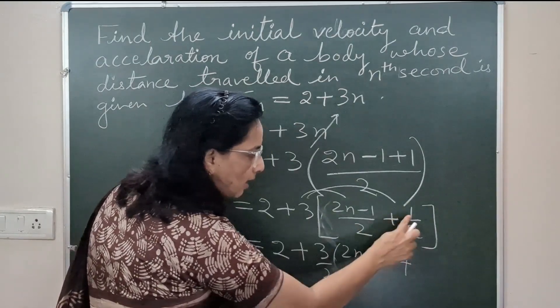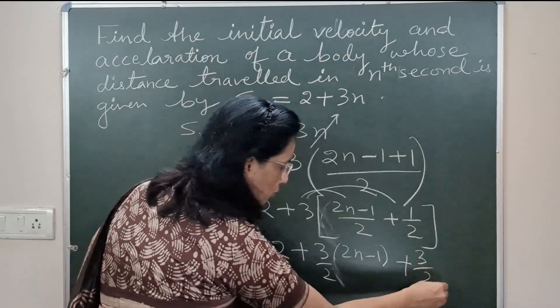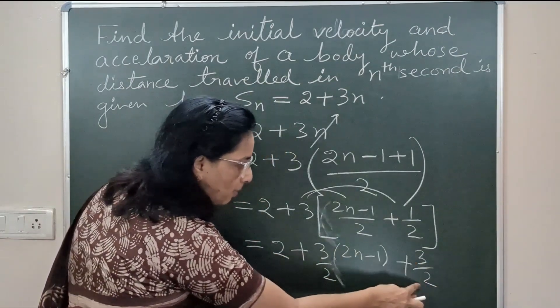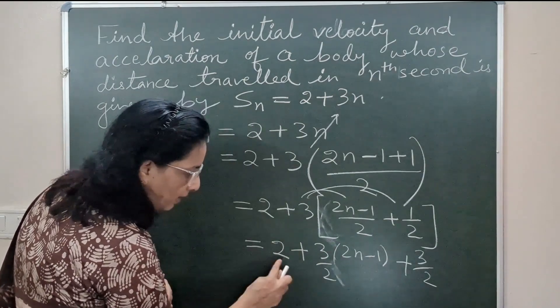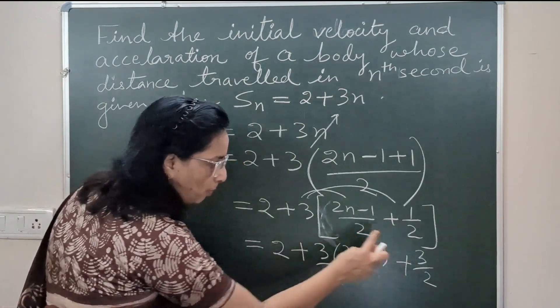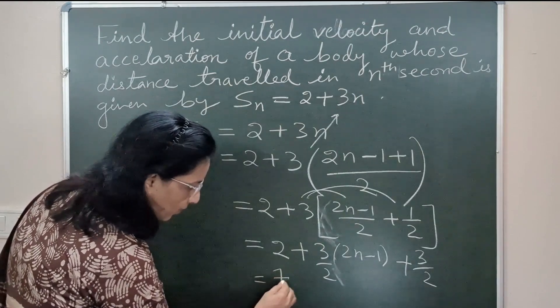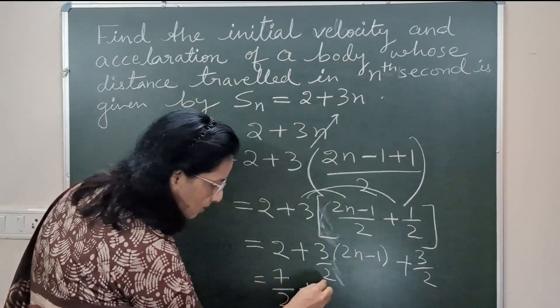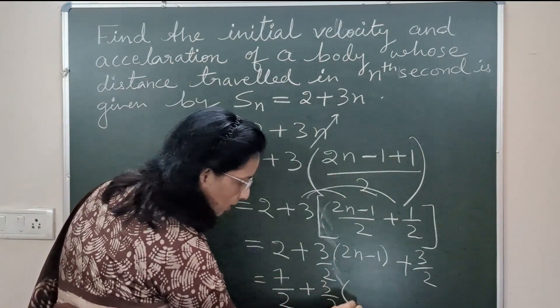2 plus 3/2 is 7/2. So 2 into 2 is 4, 4 plus 3 is 7. So this is 7/2 plus (3/2) times (2n - 1).